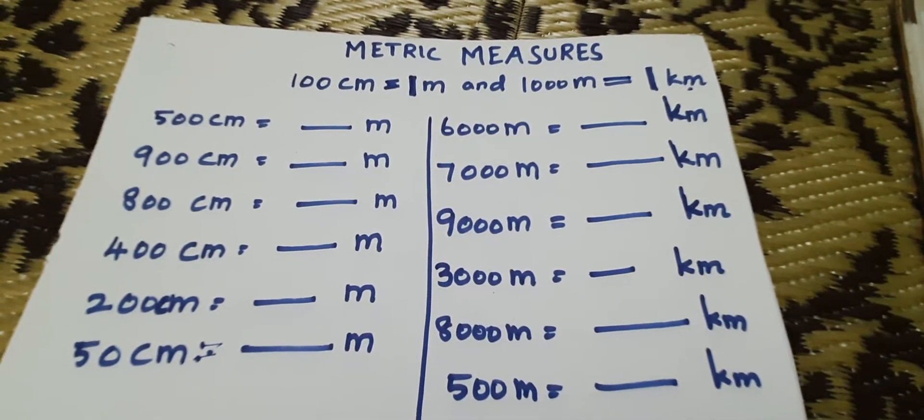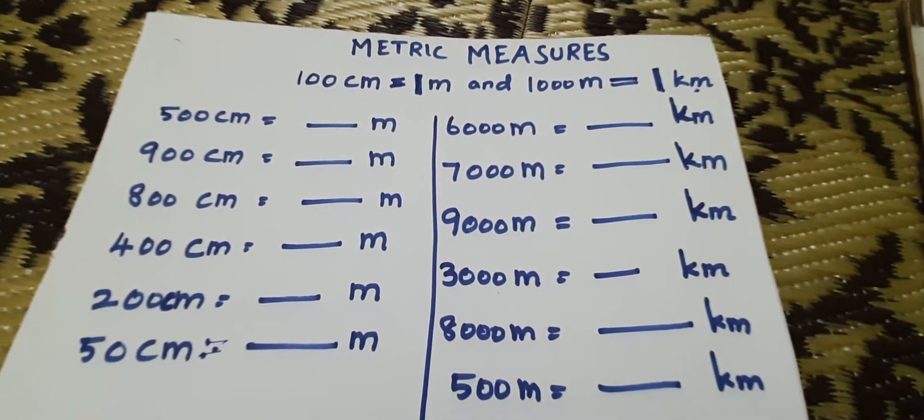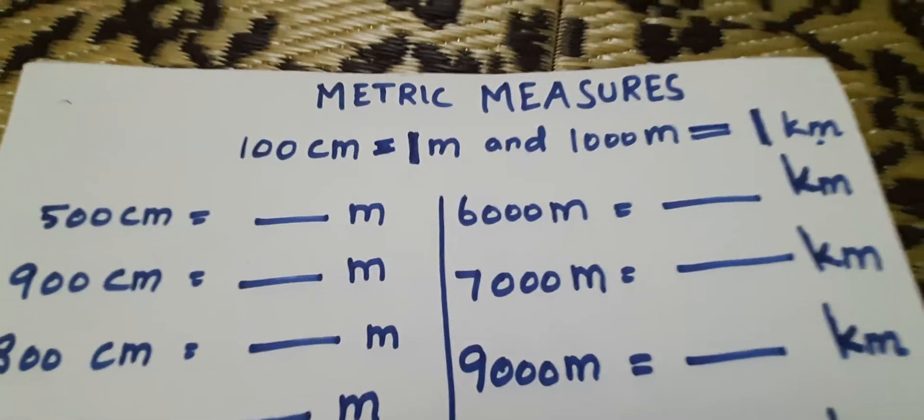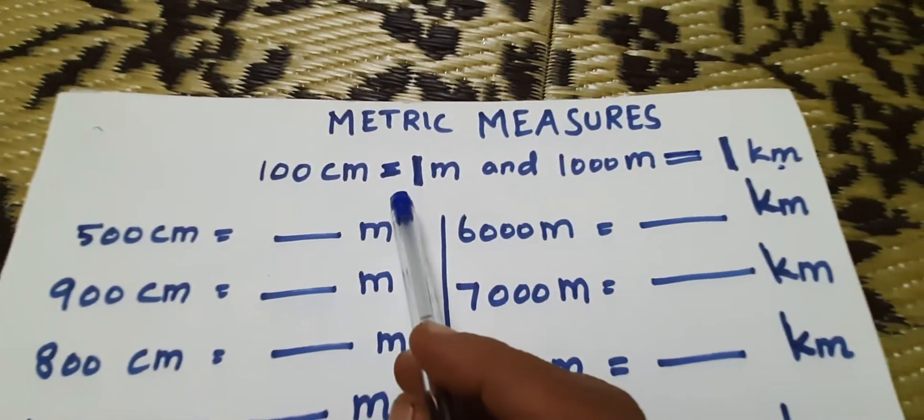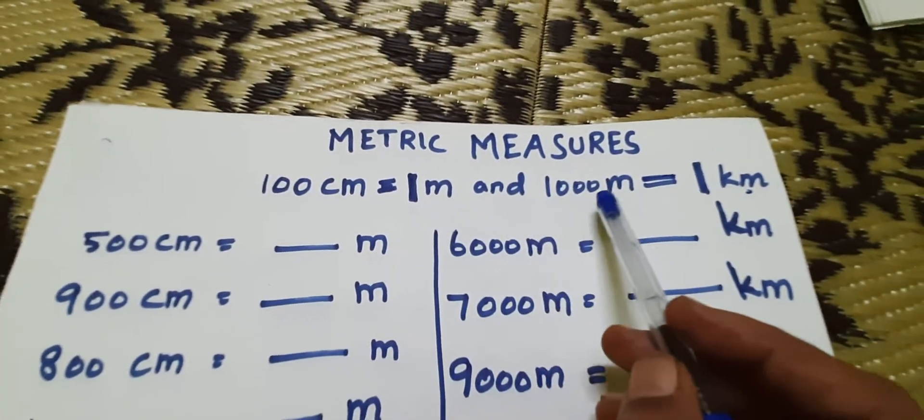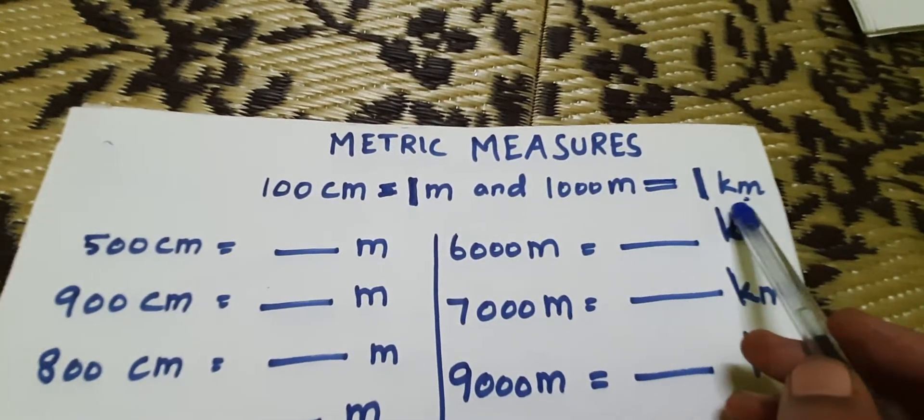We use the standard units centimeters, meters and kilometers to measure distance. 100 centimeter equal to one meter and thousand meter equal to one kilometer.